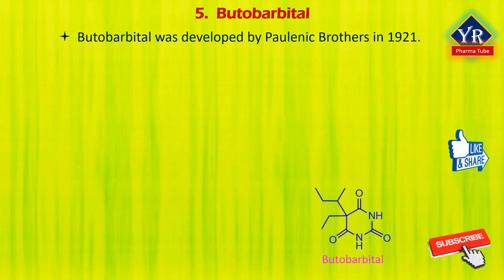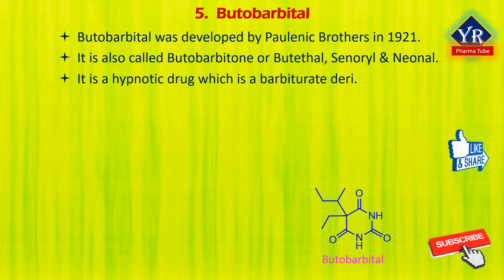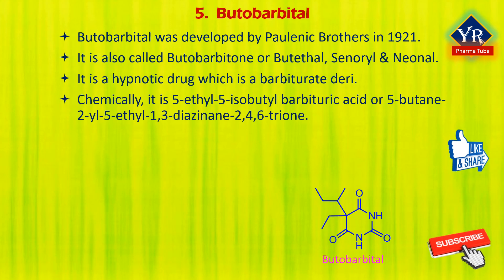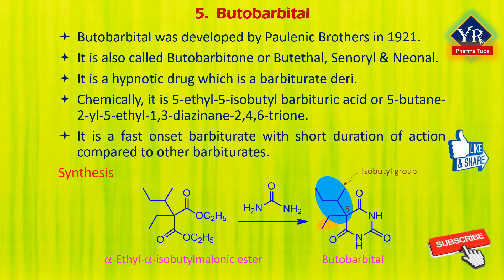The fifth drug is butobarbital, developed by Paulon brothers in 1921. It is also called butobarbitone, butethyl, senoryl, or neonol. It is a hypnotic drug and a barbiturate derivative, chemically 5-ethyl-5-isobutyl barbituric acid or 5-butyl-5-ethyl-1,3-diazinane-2,4,6-trione. It is a fast-onset barbiturate with short duration of action compared to other barbiturates. Butobarbital is synthesized by condensation of alpha-ethyl-alpha-isobutyl malonic ester with urea.